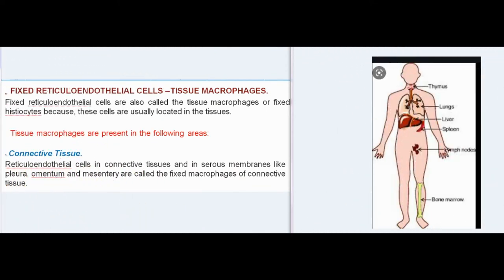Fixed reticuloendothelial cells, also called tissue macrophages or fixed histiocytes, are usually located in the tissues. Tissue macrophages are present in connective tissue; reticuloendothelial cells in connective tissues and in serous membranes like pleura, omentum, and mesentery are called the fixed macrophages of connective tissue.